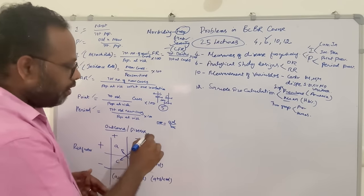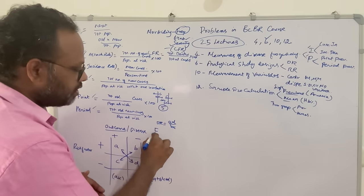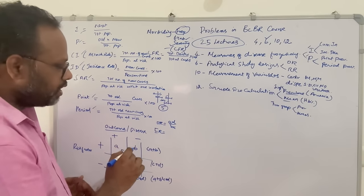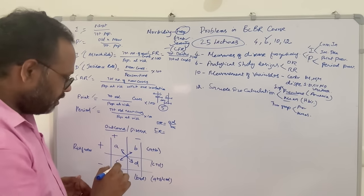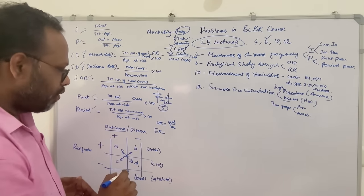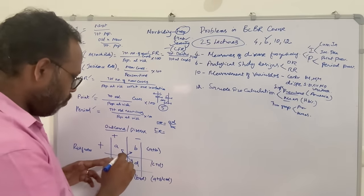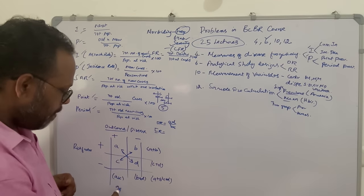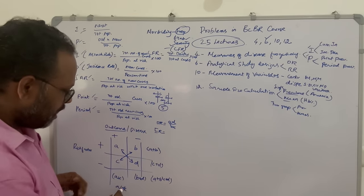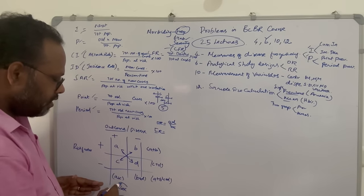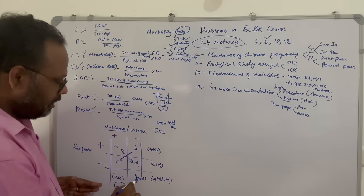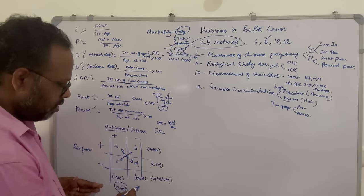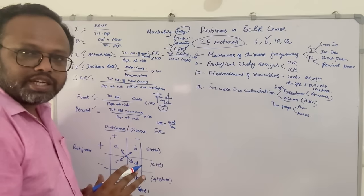In a case-control study, we can also calculate exposure rates: A divided by A+C gives the exposure rate among the diseased — how many among the disease group are exposed. B divided by B+D gives the exposure rate among the healthy. But this is not the primary focus for the exam.